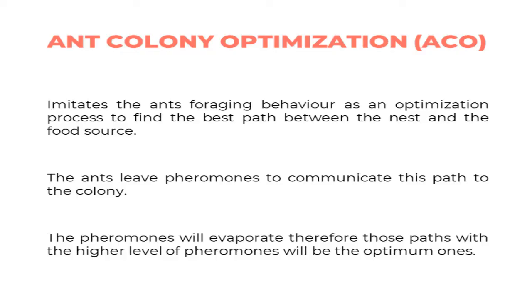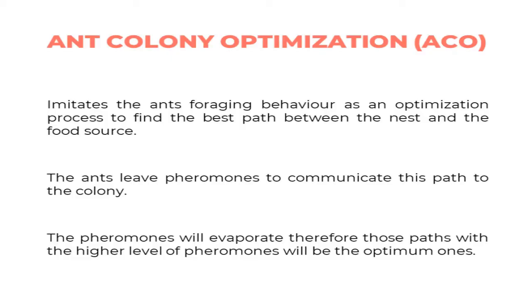The inspiration comes from the foraging behavior of ants. Ants start from the nest — where they live — and need to find sources of food to bring back. What the ants do is create the shortest path between the nest and the food source. They need to be smart enough to avoid obstacles. This optimum shortest path is found through a process of optimization, trial and error, that allows the ants to find the best way to obtain food.